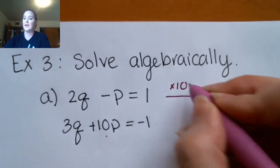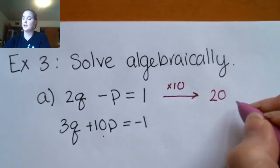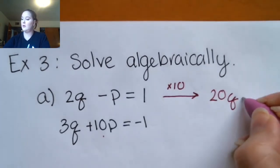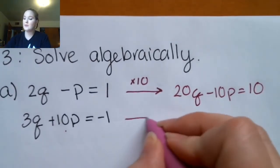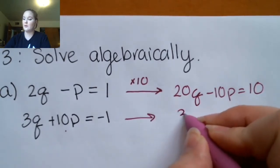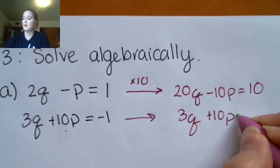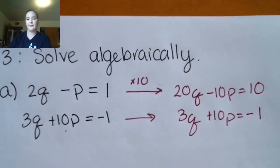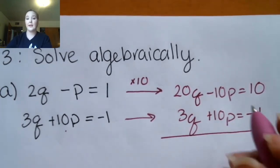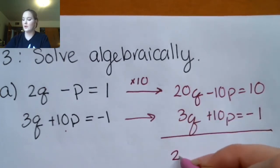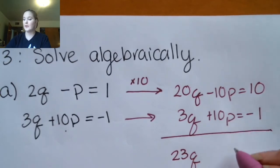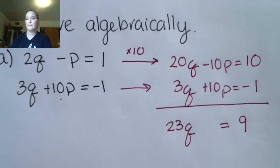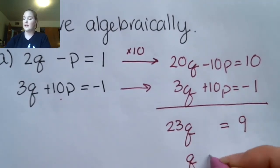If I want to make these coefficients 6 and negative 6, I'd need to multiply both equations. But if I'm looking for the least common multiple of negative 1 and 10, I really only have to multiply the top one. So I'm going to multiply it by 10, giving me 20q minus 10p equals 10. Then I'll just copy my second equation: 3q plus 10p equals negative 1.